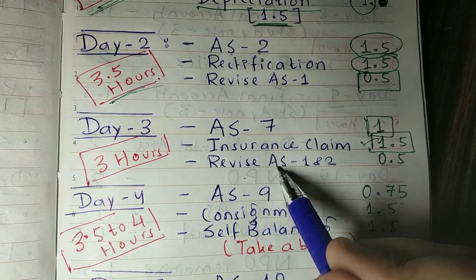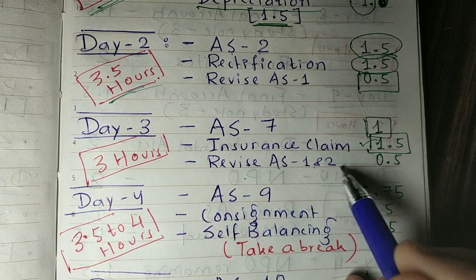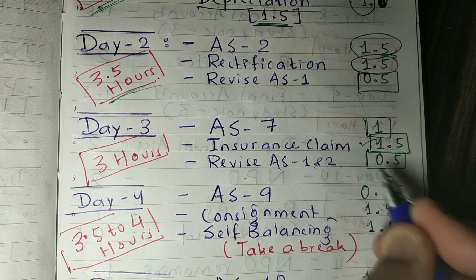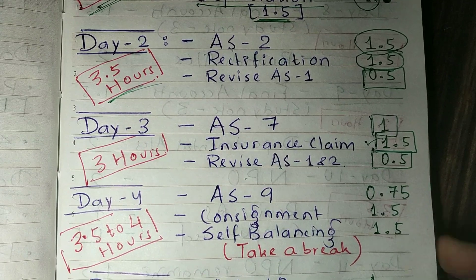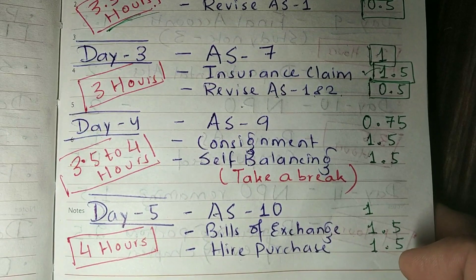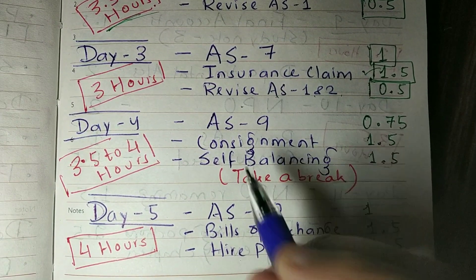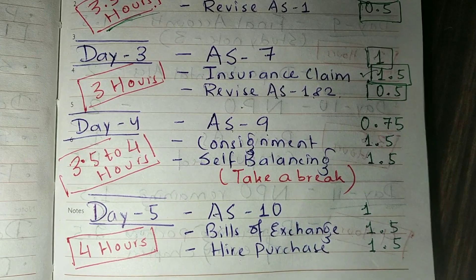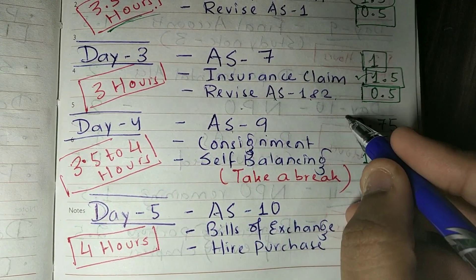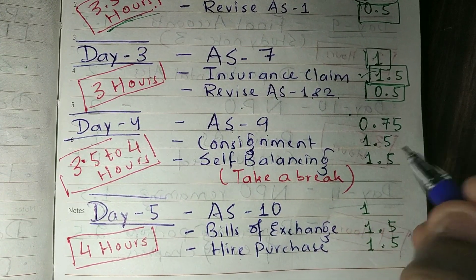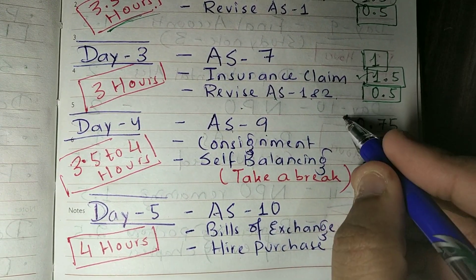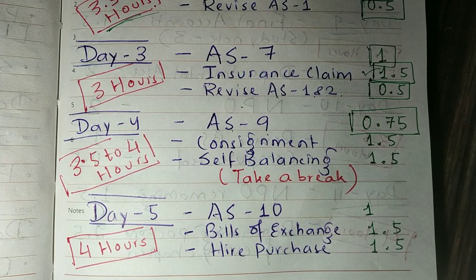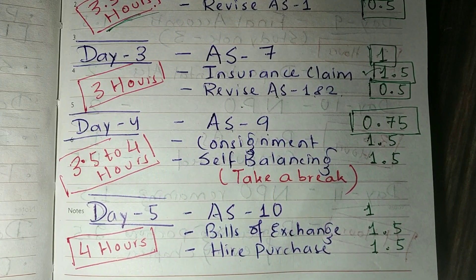After the Insurance Claims chapter on Day 3, you have to revise Accounting Standards 1 and 2, which will take half an hour. On Day 4, you have to learn Accounting Standard 9. This is a relatively brief accounting standard and will take 45 minutes to a maximum of 1 hour.